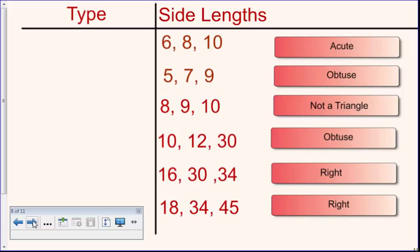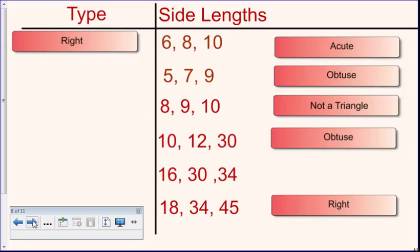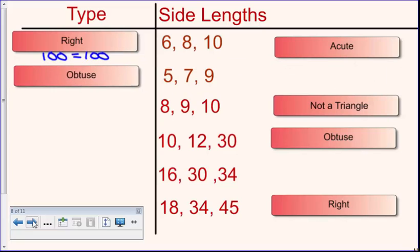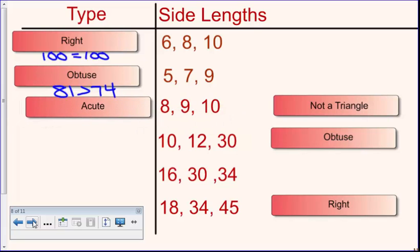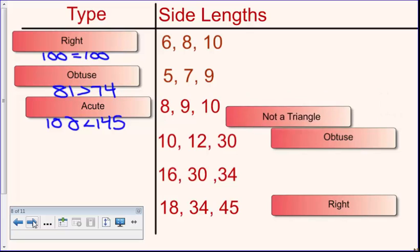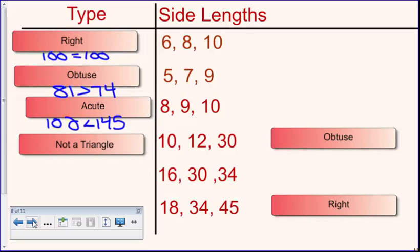All right. So the first one, hopefully you got is a right triangle. When you plug in your numbers and square it, you should get 100 equals 100. The second one is obtuse. When you plug in your numbers, you should have gotten 81 is greater than 74. The third one is acute. When you do the math, you get 100 is less than 145. Number four is actually not a triangle. If you remember how to check if something is a triangle, the two smallest numbers, 10 plus 12, have to add up and be greater than the third. Well, 22 is not greater than 30, so these three wouldn't even form a triangle. So don't be fooled.